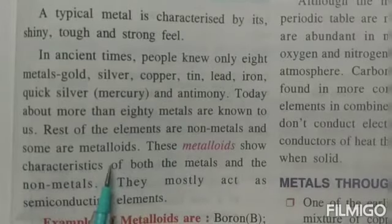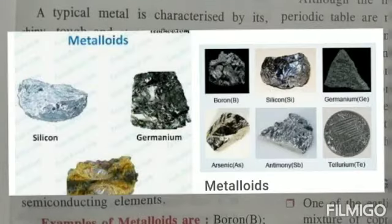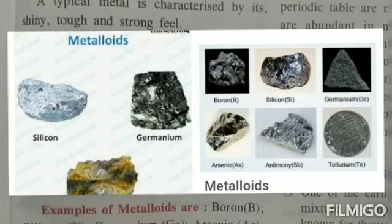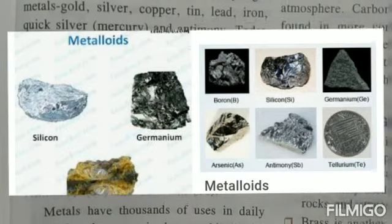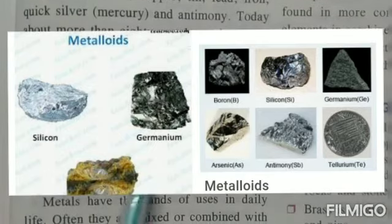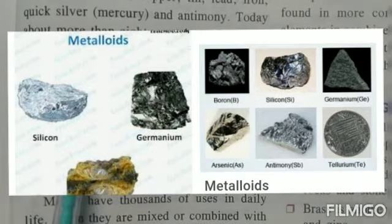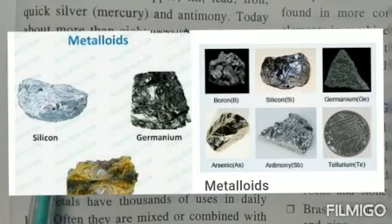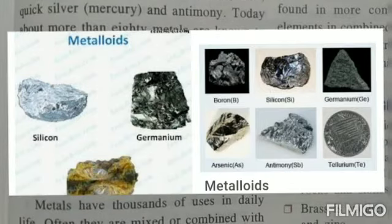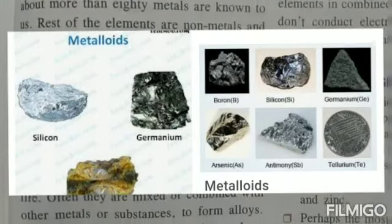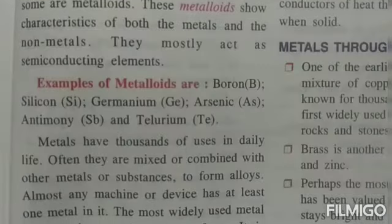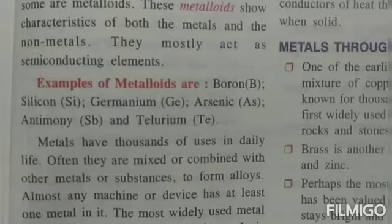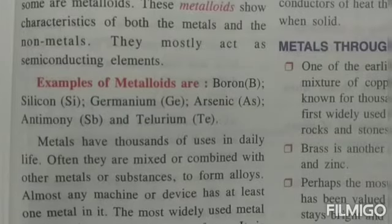Metalloids are a group of elements that have some properties of metals and some properties of nonmetals. These metalloids show characteristics of both groups and mostly act as semiconducting elements. Some examples of metalloids are boron, silicon, germanium, arsenic, antimony, and tellurium.